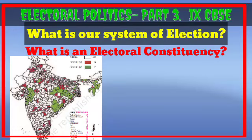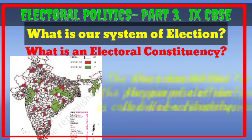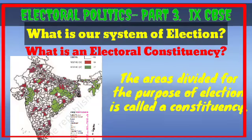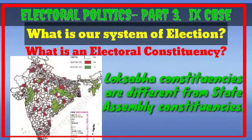All the MPs of India are not elected by all the people of the country, and all the MLAs of a particular state are not elected by all the people of that state. We have a system for that — our country is divided into different areas for the purpose of elections, and these areas are called electoral constituencies. The voters who live in a Lok Sabha constituency elect an MP from that constituency.